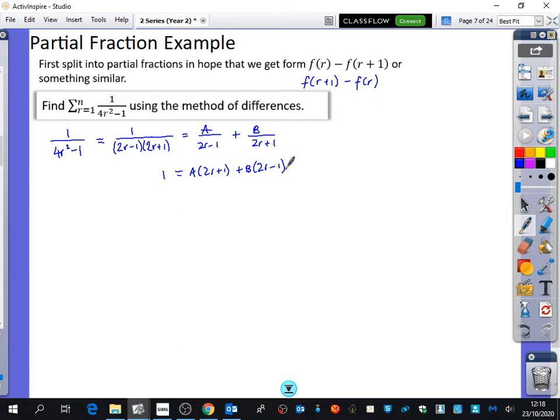I'll probably just do substitution. Seems like a sensible one to do. So I'll start off by saying that r is equal to negative one half. So 1 equals minus 2b. So b is minus one half. And the other value I'll substitute in is that r is equal to one half. So that I get 1 equals 2a. So a is equal to one half.